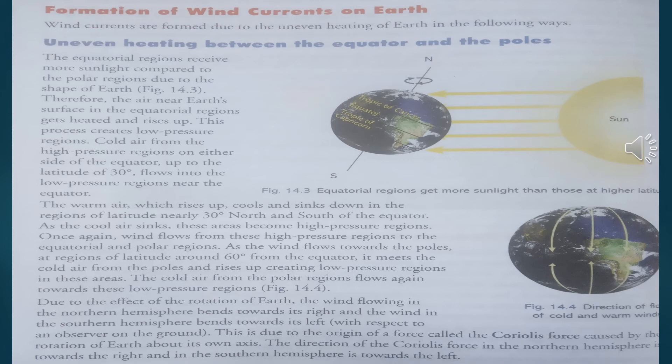The cold air from the polar region flows again towards this low pressure area. Due to the effect of the rotation of the Earth, the wind flowing in the northern hemisphere bends towards the right, and the wind in the southern hemisphere bends towards the left. This is due to a force called the Coriolis force, caused by the rotation of the Earth on its axis. The direction of the Coriolis force in the northern hemisphere is towards the right and in the southern hemisphere is towards the left.